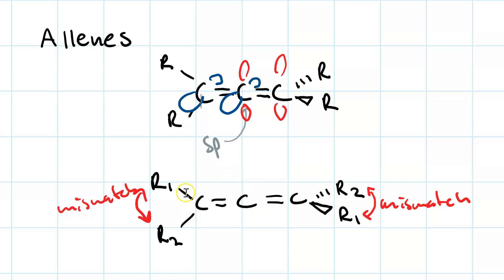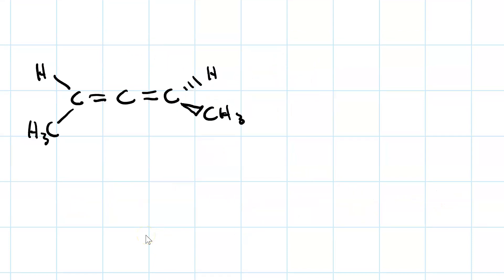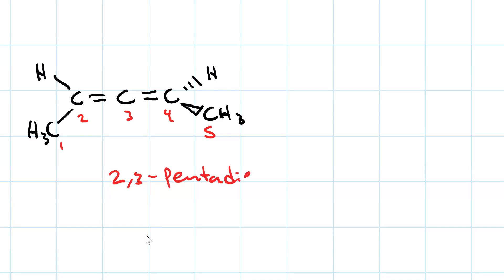These R-groups point to the corners of an elongated tetrahedron. Here's one allene. If we number it: one, two, three, four, five — the parent chain is 2,3-pentadiene.